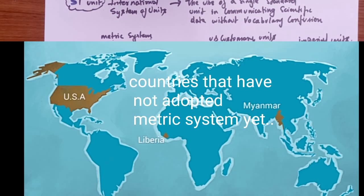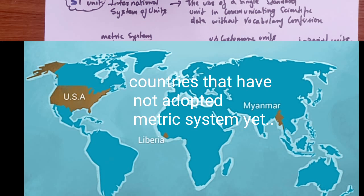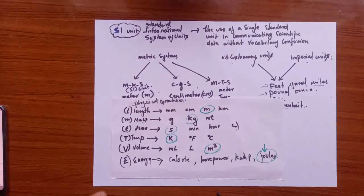These are the systems used across different countries. Let me just quickly show you the picture of where these measuring systems are used across different countries. As you can see here, most of the countries use the metric system including India, and only some few of the countries use the US customary units: the United States, Liberia, and Myanmar.